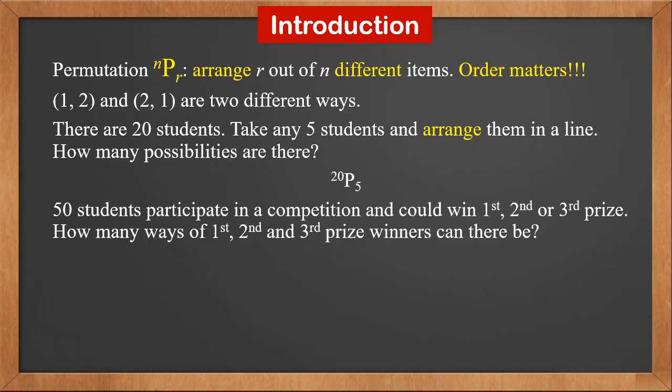50 students participate in a competition and could win first, second or third prize. How many ways of first, second and third prize winners can there be? The order of prize matters. You win first prize and I win second prize is different from you win second prize and I win first prize. Therefore the answer is 50P3.